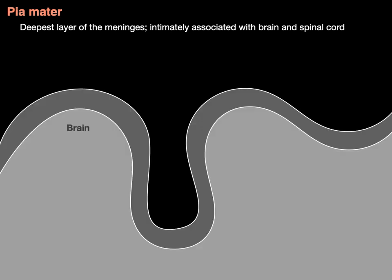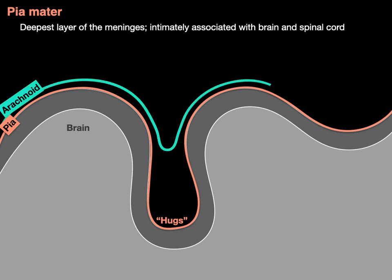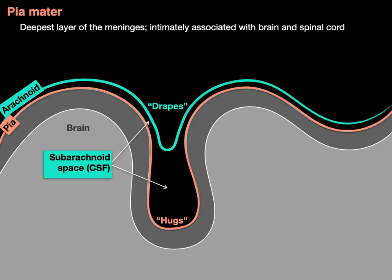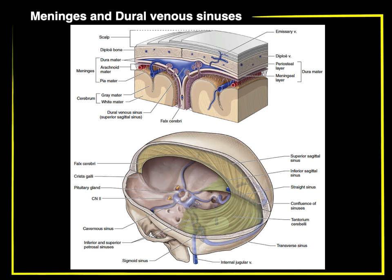Here's a schematic of the brain showing the pia mater hugging the contours of the brain, in contrast to the arachnoid mater, which more drapes the contours. Between the arachnoid and pia mater is the subarachnoid space filled with cerebrospinal fluid. And that are the meninges and dural venous sinuses in a nutshell.